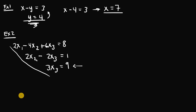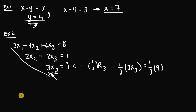We can use an elementary row operation on equation three to solve for x3. One of our rules for elementary row operations is that we can multiply any equation by any constant other than zero. So to get rid of the three, I can multiply equation three by one-third: r3 times one-third. One-third times 3x3 is equal to one-third times nine — the threes cancel, leaving x3 on the left-hand side, and nine divided by three is three. So x3 is equal to three.